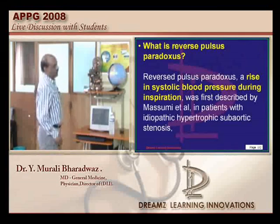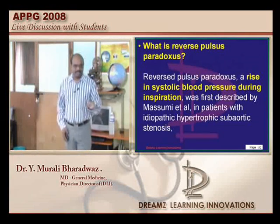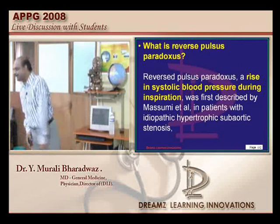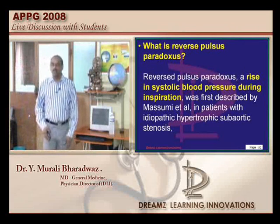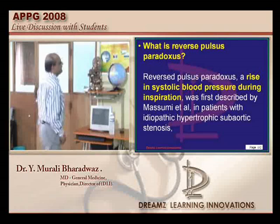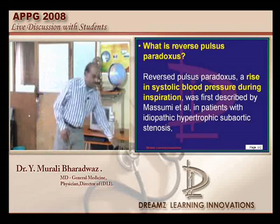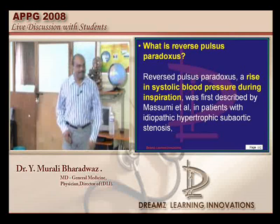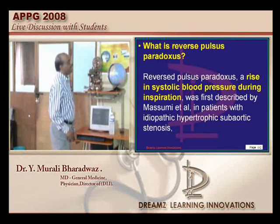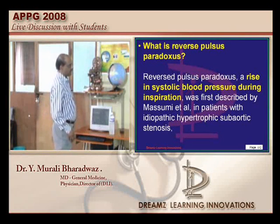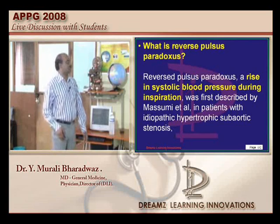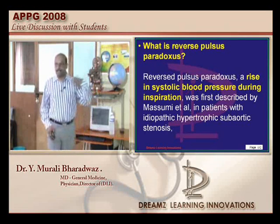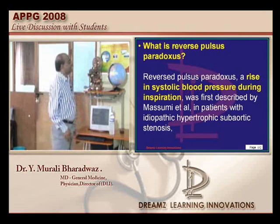There is another situation called reverse pulsus paradoxus. What do you mean by it? Typically, instead of a fall of the systolic blood pressure, there is a rise of the systolic blood pressure with inspiration. When does it happen? It happens in hypertrophic obstructive subaortic stenosis — a very important situation. And also in patients who are on positive pressure ventilation, it typically occurs.